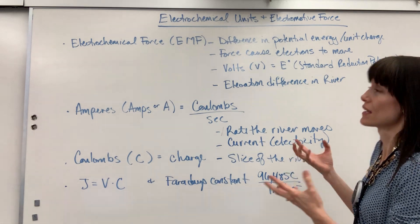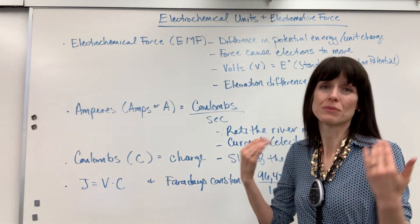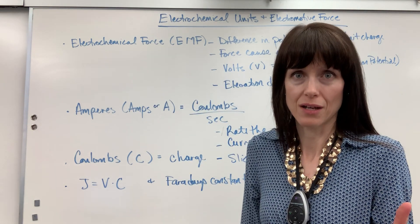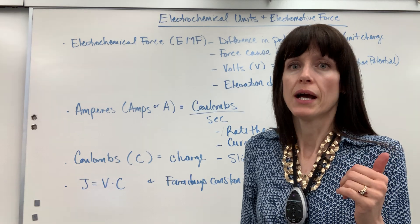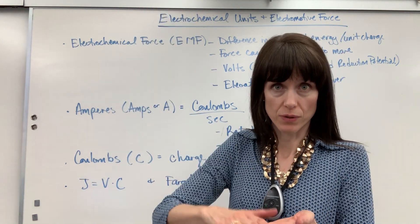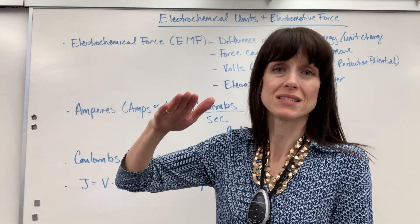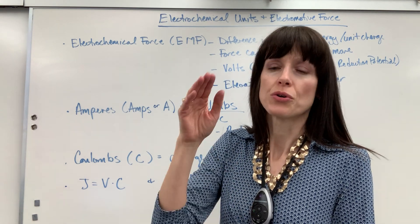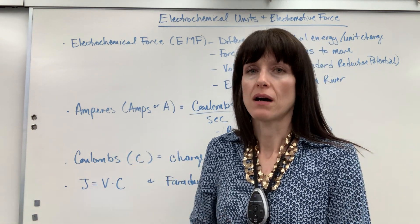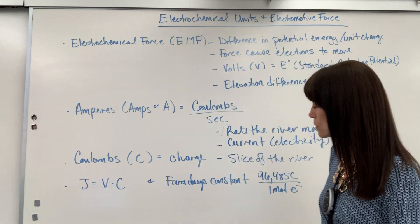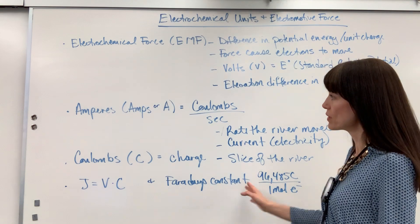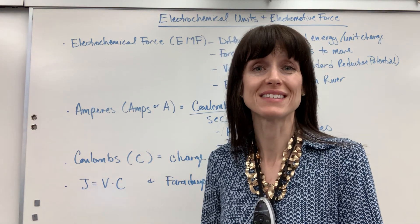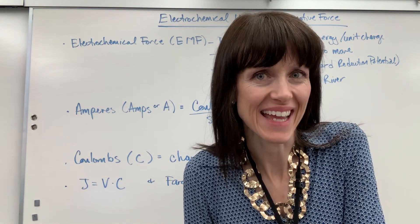So here we have it — electrochemical units. It took me years to make sense of this, and it's still very abstract. But you're thinking: potential difference is voltage; a slice, an amount of charge — that's coulombs; and as that charge moves, that's your amperage, coulombs per second. Putting it all together, joules equals volts times coulombs, and Faraday's constant. You have what you need with units. If you need more help with electrochemistry, please look at my playlist that says redox electrochemistry. Have a fabulous day!